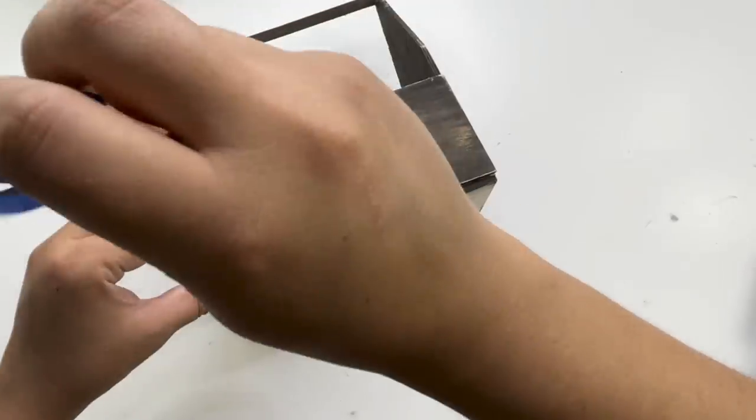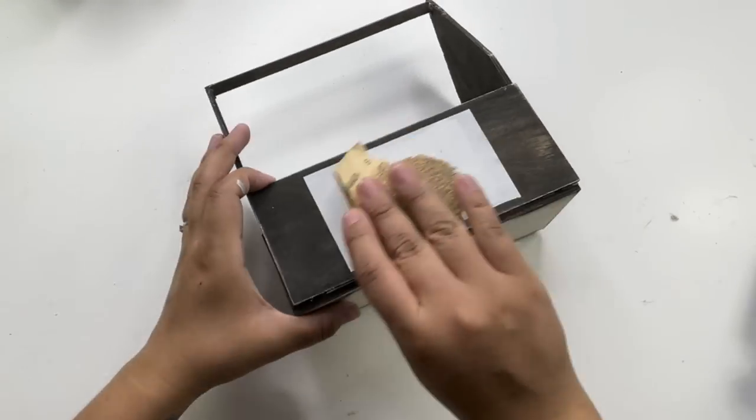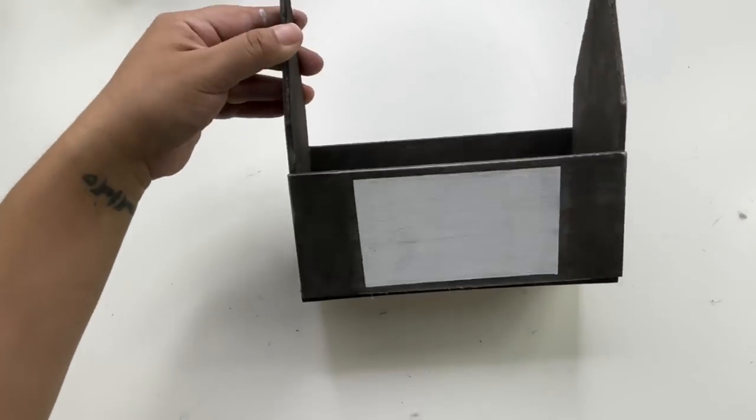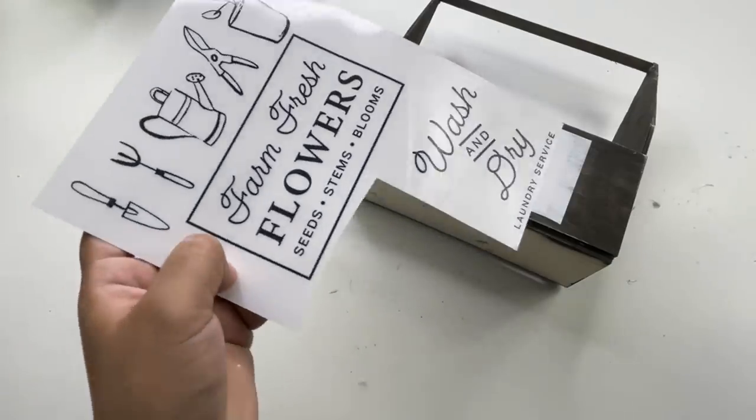Now you can see here the square is a lot bigger, and I'm going to just sand it down. Once I am done doing that, I'm going to transfer the little image I'm using, which says farm fresh flower seeds stems.